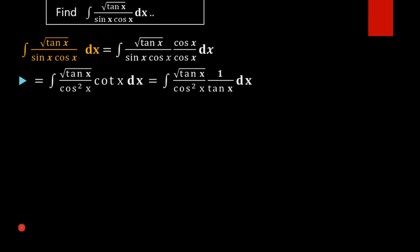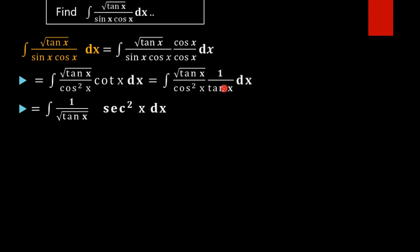On cancelling square root of tan x from tan x, we will get the integral of 1 by square root of tan x into sec²x dx. That is, 1 by cos²x is turned into sec²x dx.